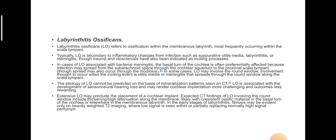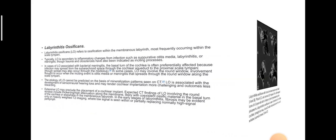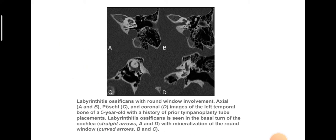Extensive labyrinthine ossificans may preclude the placement of a cochlear implant. Expected CT findings include thickening and increased attenuation along the round window membrane, likely with co-existent ossific material in the basal turn of the cochlea or elsewhere in the membranous labyrinth. In early stages, fibrosis may be evident only on heavily T2-weighted MR imaging where low signal is seen within or partially replacing normally high-signal perilymph. This case of labyrinthine ossificans shows CT ossification in the basal turn of the cochlea with mineralization of the round window.